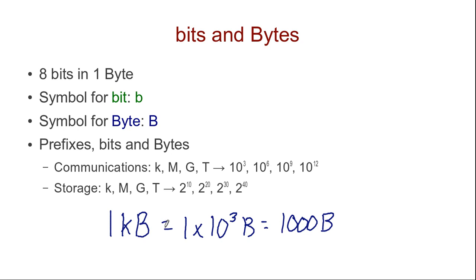But we are talking, for example, about hard disk size, file size, that is storage, 1 kilobyte, what does the k mean? Well, it commonly means 2 to the power of 10. So we get 1 times 2 to the power of 10 bytes. And 2 to the power of 10 is 1024.